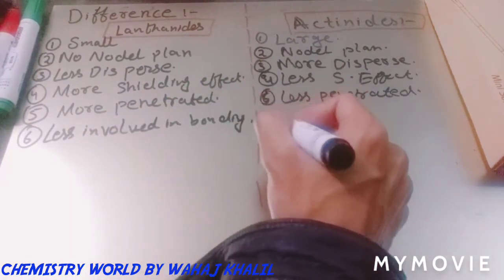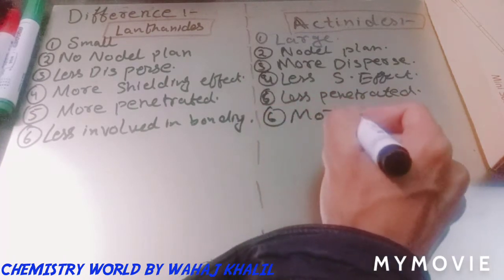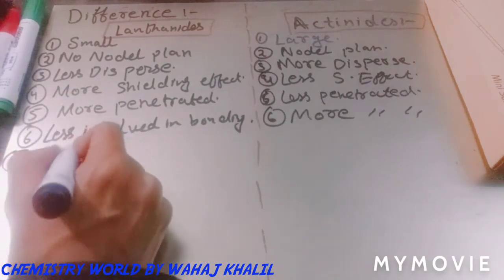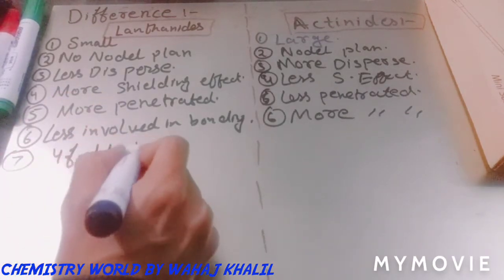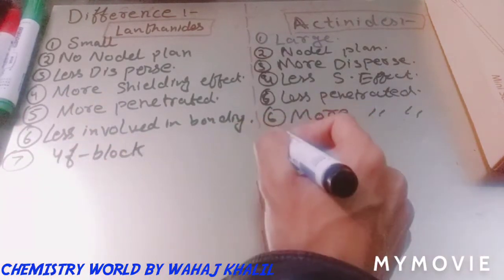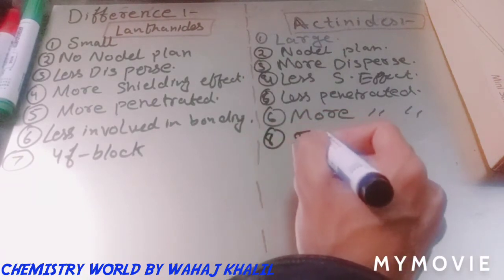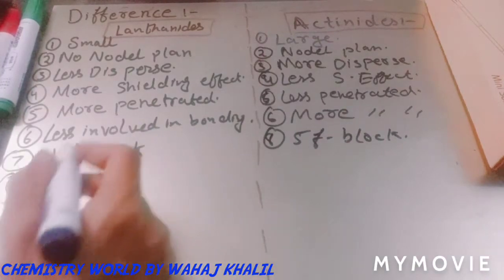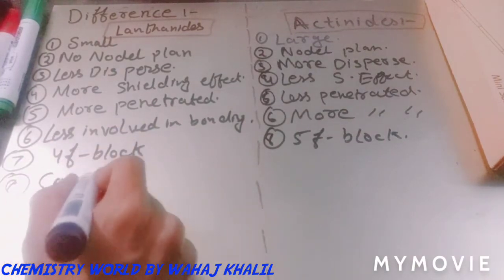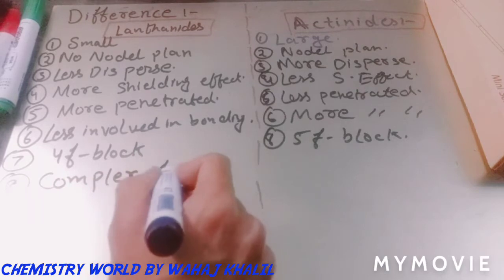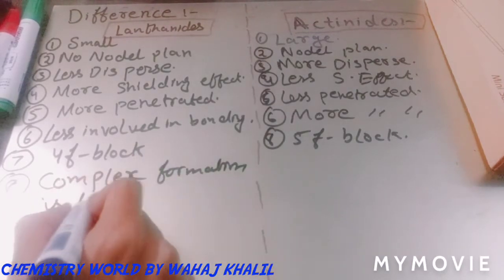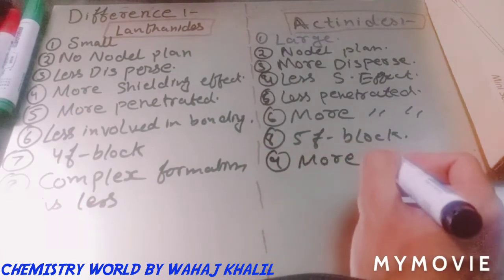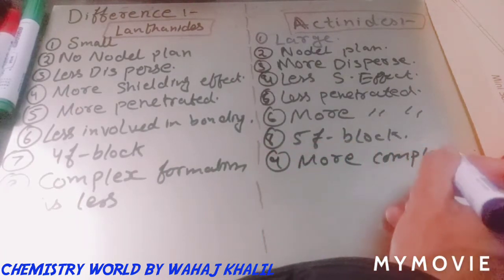Seventh point: lanthanides are 4f block elements, while actinides are 5f block elements. Regarding complex formation, lanthanides show less complex formation as compared to actinides, which show more complex formation.